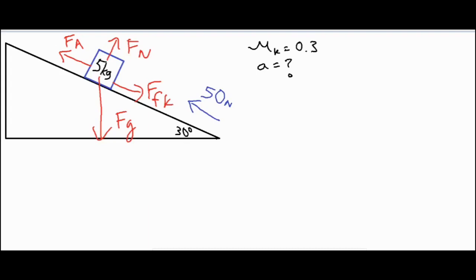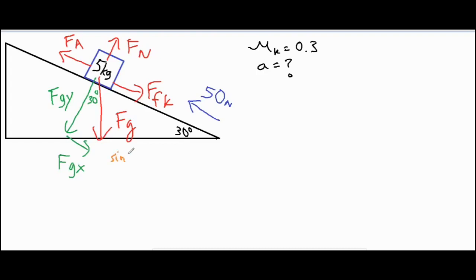The first thing we're going to do is break our force of gravity into its components so that we can use it in our formula. We'll call those fgy for our perpendicular component and fgx for our parallel component. This 30 degree angle always translates into this part of our right triangle, and then we can do a little bit of trig to solve for fgy and fgx.